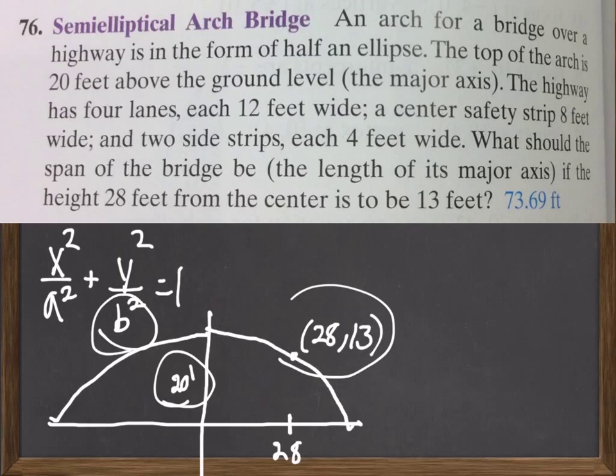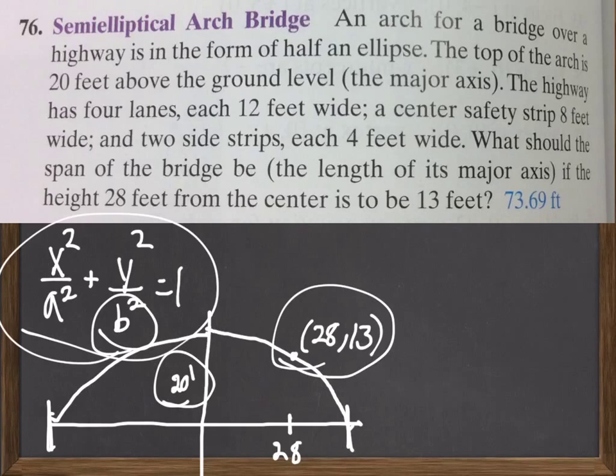And then, because we're given a point, we have an x and y. So, for us to find the span of the bridge, the gap from one end to the other, we just need to figure out what a is. Well, since we know what b is and we have an x and y value, we know three of those four things in our equation here. And we should plug those in and then solve for a.